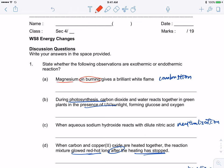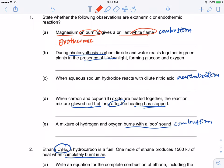Magnesium burning gives us a brilliant white flame. This is a combustion reaction which is exothermic. It gives a brilliant white flame that's why it's exothermic. During photosynthesis, carbon dioxide and water react together in green plants in the presence of UV light to form glucose and oxygen. Photosynthesis is an endothermic process.